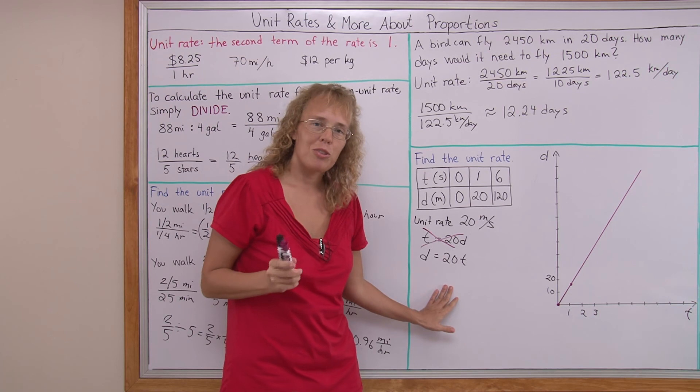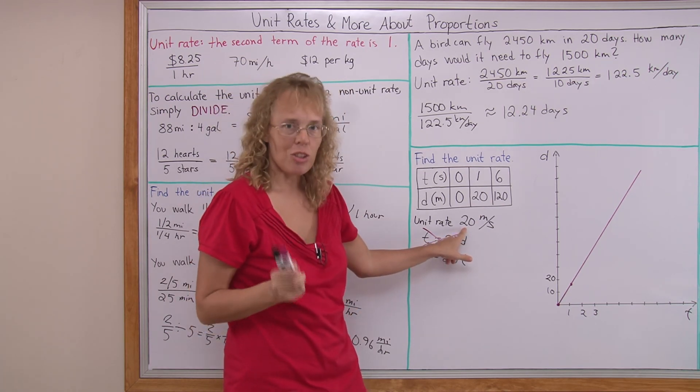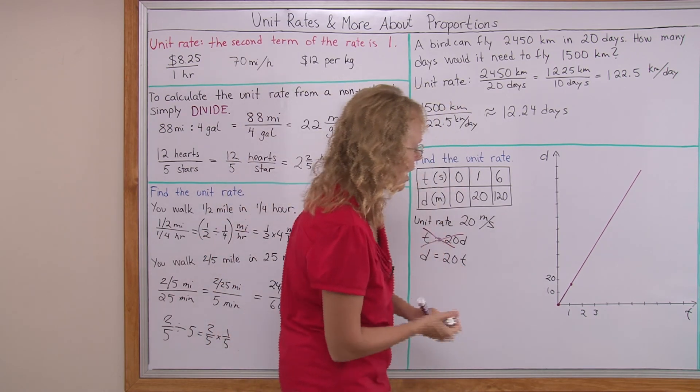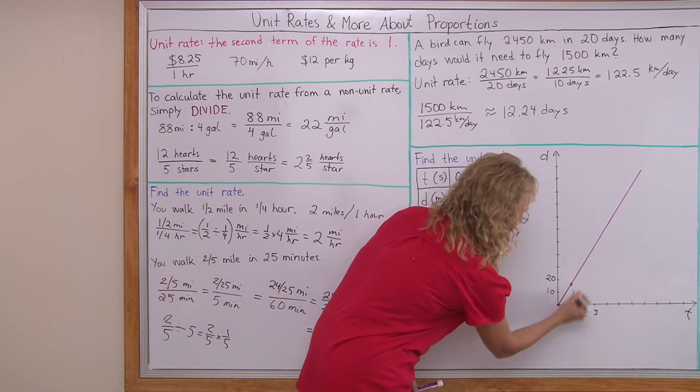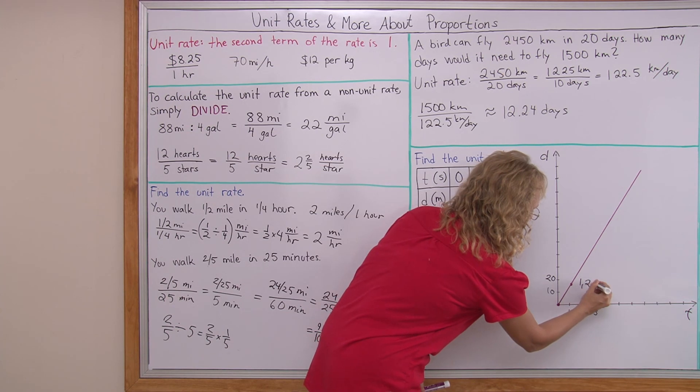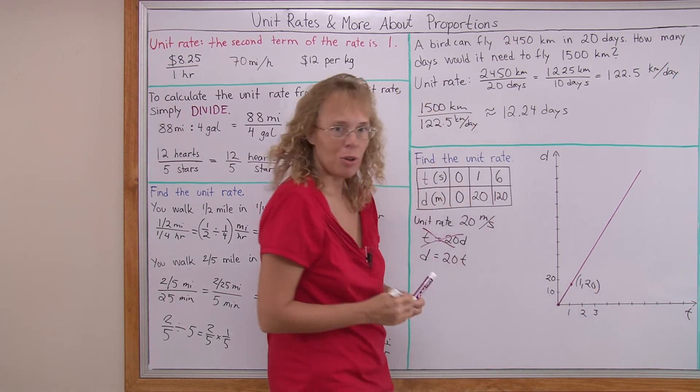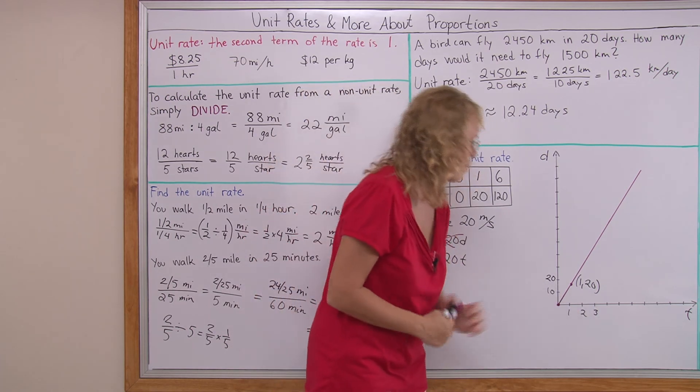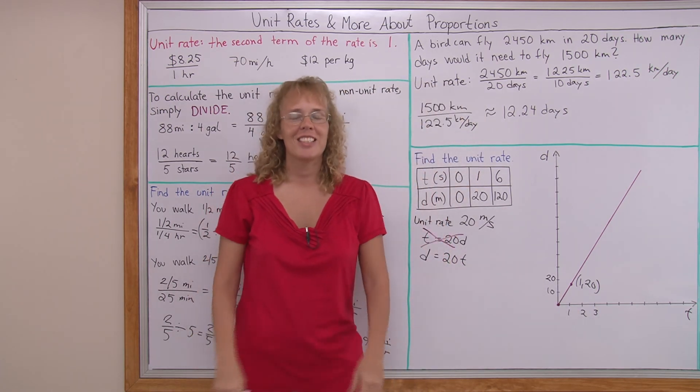The main thing I want you to keep in mind is that the unit rate is also the slope. 20 is the slope. And on the graph, there's the point 1 and something. 120 is the point signifying to us the unit rate, also signifying to us the slope. We're all done with this and I hope it was helpful.